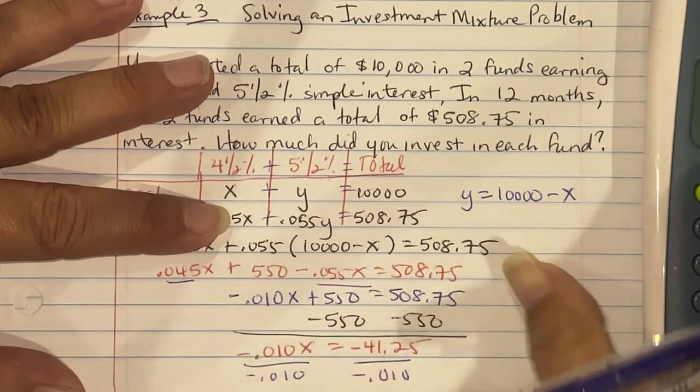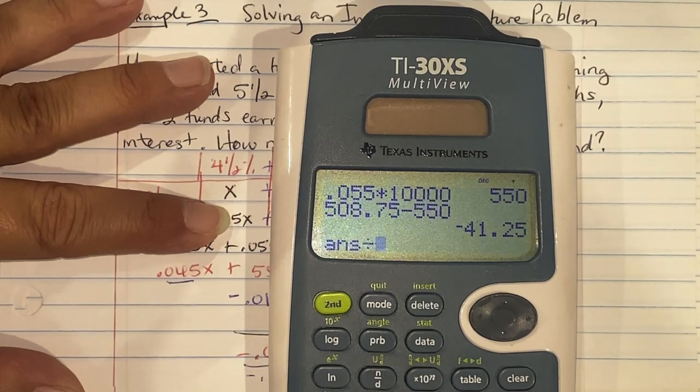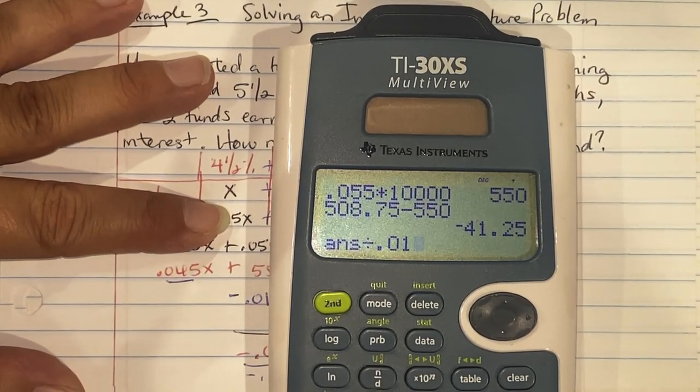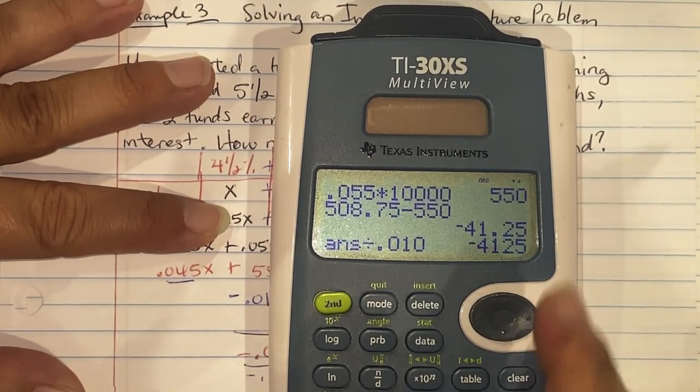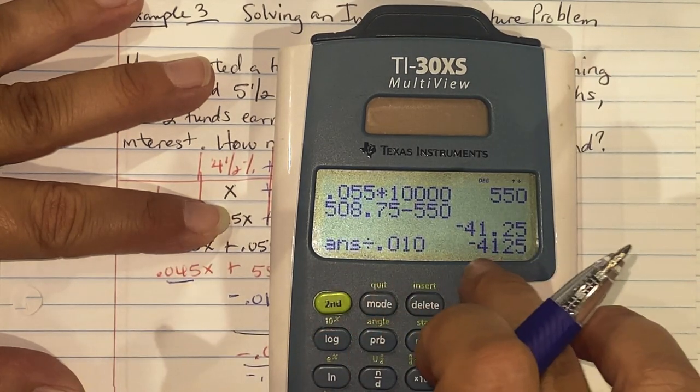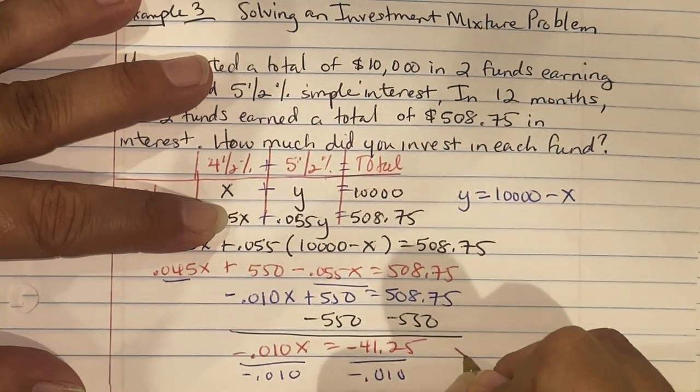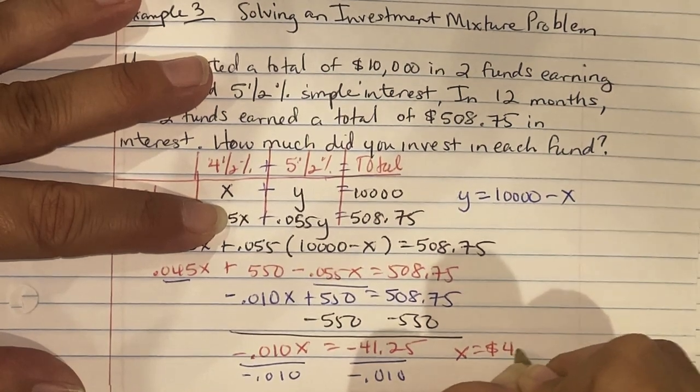So we're dividing by 0.010. Remember that we're dividing by negative, so this is actually positive 41.25. So X is 4,125.